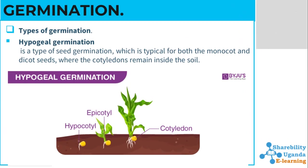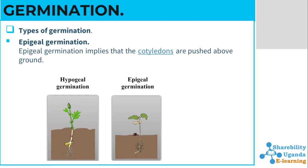We have two types of germination: hypogeal germination and epigeal germination. Hypogeal germination is the type of germination typical for both monocot and dicot seeds, where cotyledons remain inside the soil. If you don't have any idea about cotyledons, you should consider watching our video where we describe seeds. In the picture below we will show you the cotyledon and how hypogeal germination takes place.